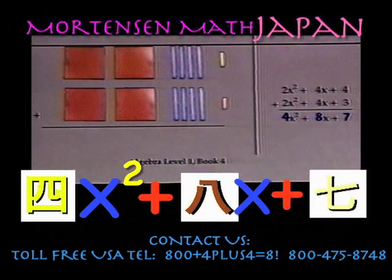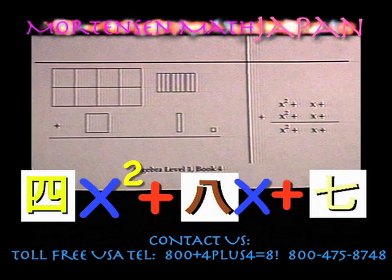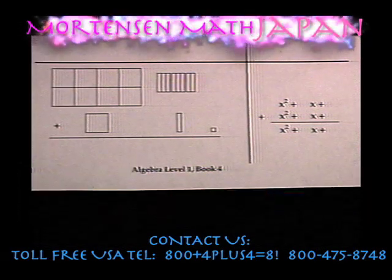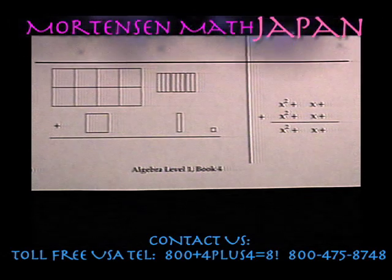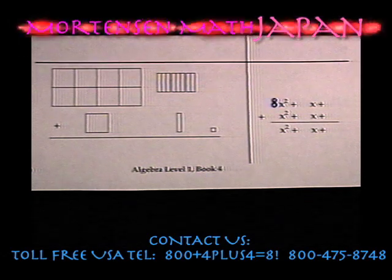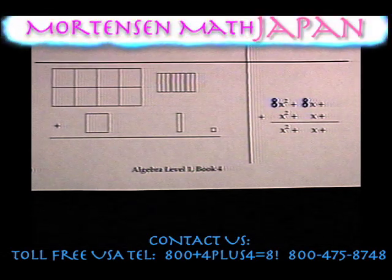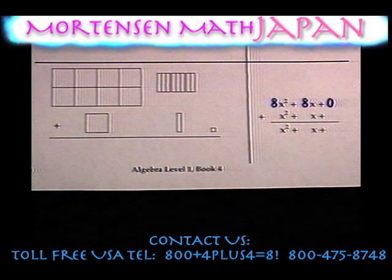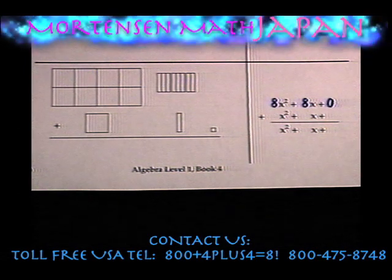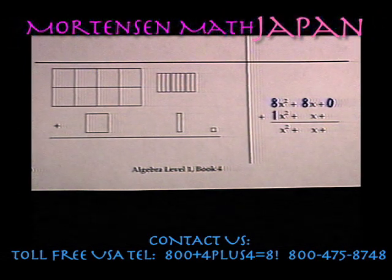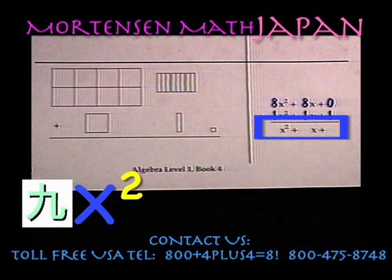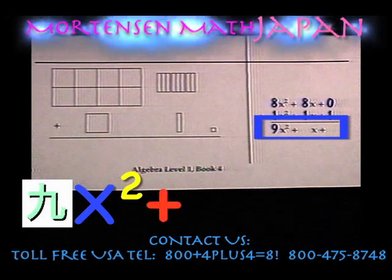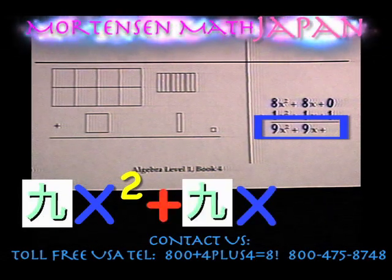Now let's do one more on page 20. We can see a picture of the blocks on the left. We will complete the notation. The top row is 8 x-square, plus 8 x, and no units. The bottom row is 1 x-square, plus 1 x, plus 1. Our answer is 9 x-square, plus 9 x, plus 1.